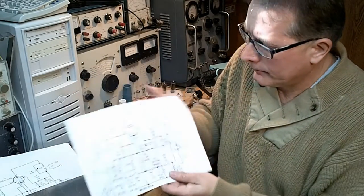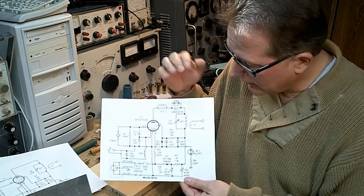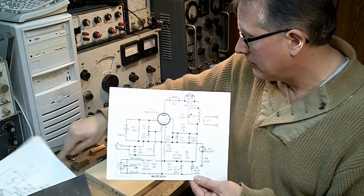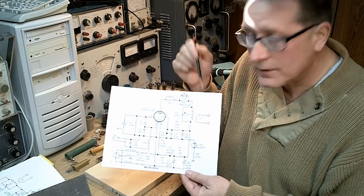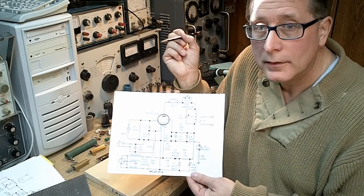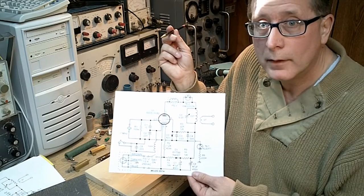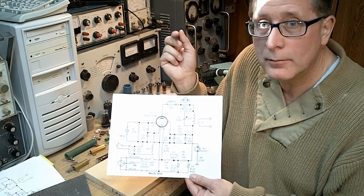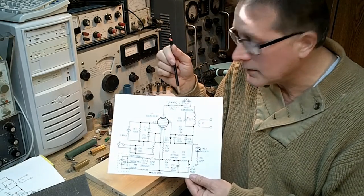Notice how the output of the transmitter is a simple link coupled output, and we change the loading by moving the link up and down on the primary of the transformer. What kind of antenna would we use with this type of output? It's obviously a low impedance type output, so you could use ordinary coax going up to a dipole or you could use 300 ohm twin line up to a dipole. Either one would be a very good transmitting antenna.